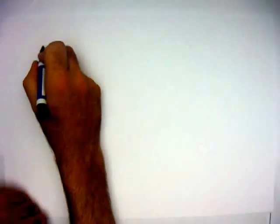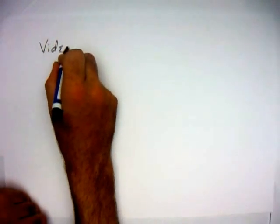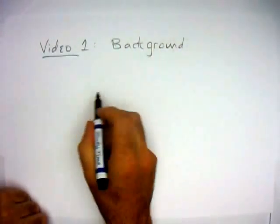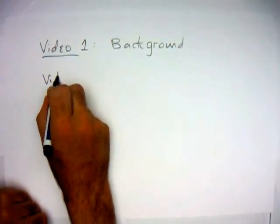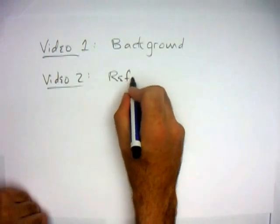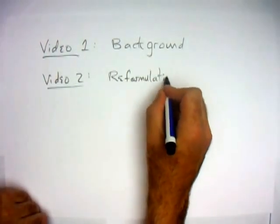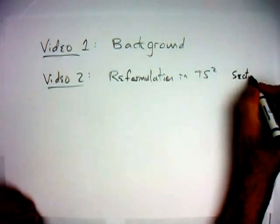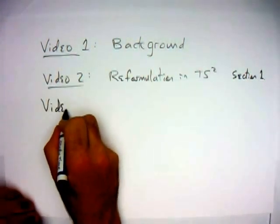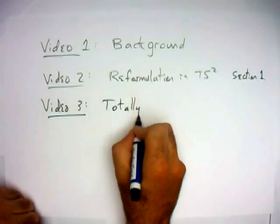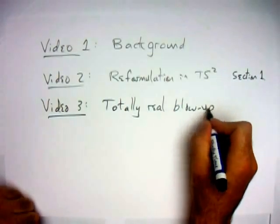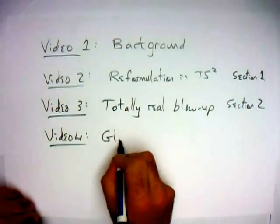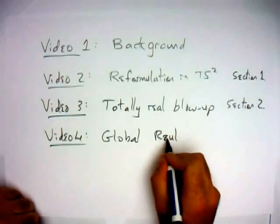Finally, let me outline the next few videos. This was just an introduction. Video one gives background on umbilic points and lines of curvature. Video two deals with the reformulation and the statement of the result in TS^2, corresponding to section one of the paper. Video three explains the totally real blow-up in more detail, corresponding to section two. Video four discusses the global Carathéodory conjecture and the global results from which this follows.